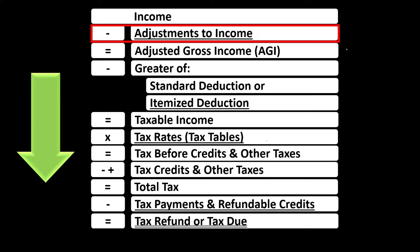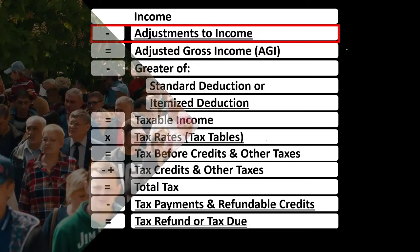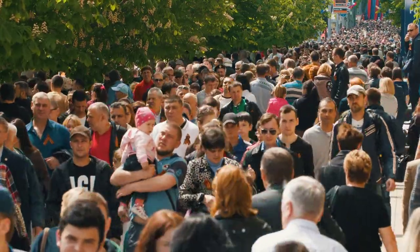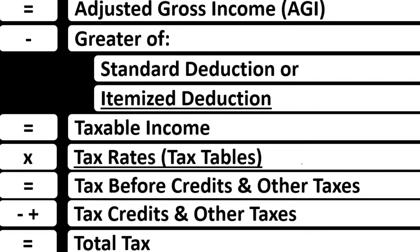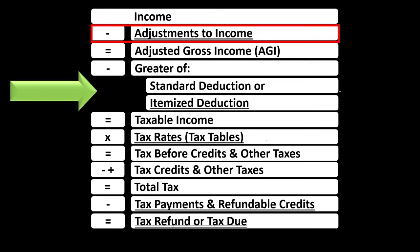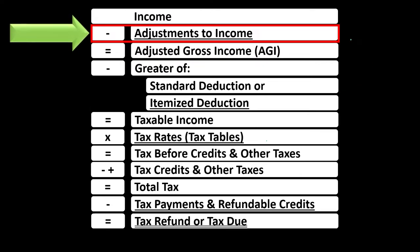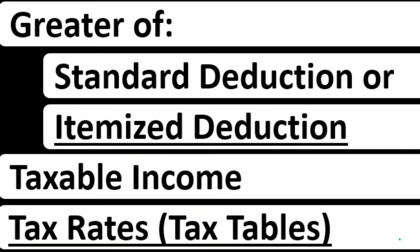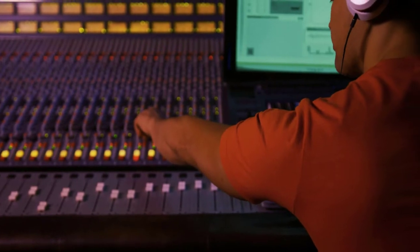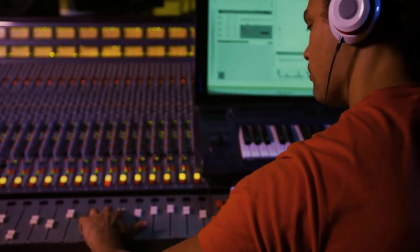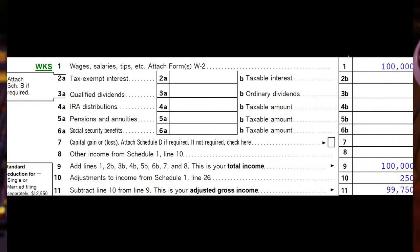It's important to categorize where different types of deductions go and the implications involved. For example, with an itemized deduction the question is whether you have more itemized deductions than the standard deduction. But if a deduction falls into the adjustments to income, you don't face that same itemized-versus-standard situation — though it will affect your AGI, which can impact phase-outs for deductions and credits.